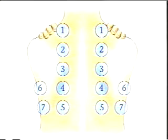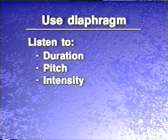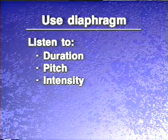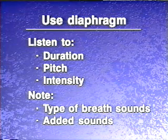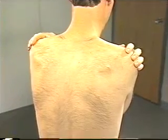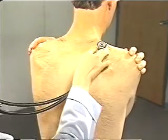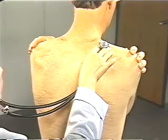To auscultate the posterior thorax, begin at the apices and proceed downward, moving systematically from side to side and comparing the sounds in symmetrical areas. Using the diaphragm of the stethoscope, listen to at least one entire breathing cycle at each location. Listen to the duration, pitch, and intensity of the inspiratory and expiratory sounds. Decide what type of breath sounds you're hearing and note any added sounds. Have the patient breathe deeply through his mouth; if the patient becomes uncomfortable, allow a rest period. Now let's listen as the examiner auscultates.